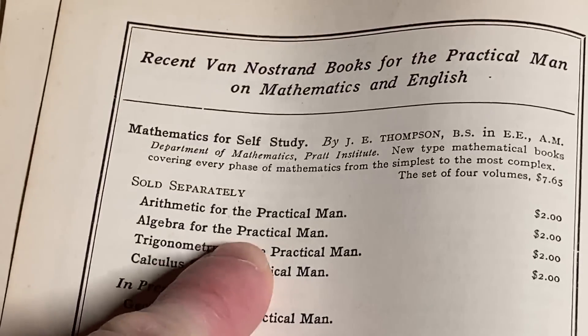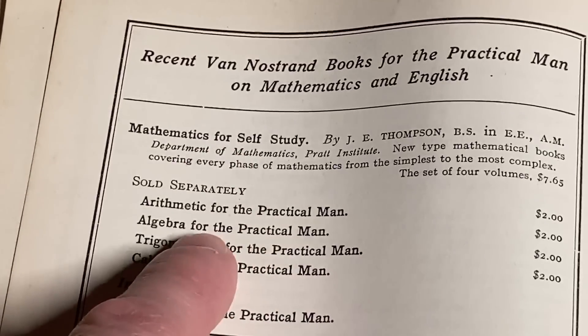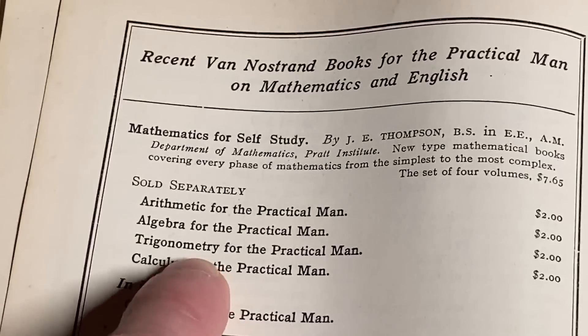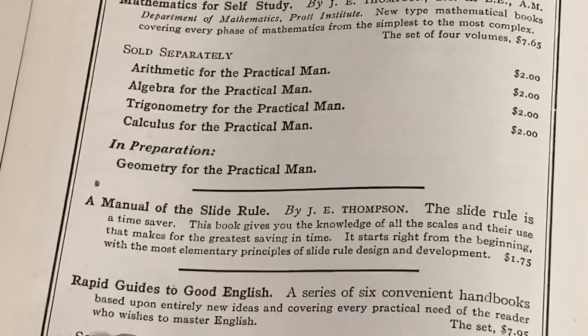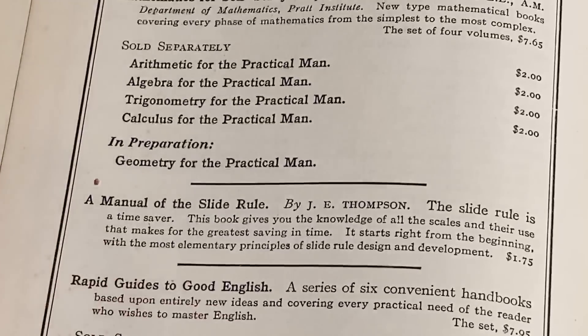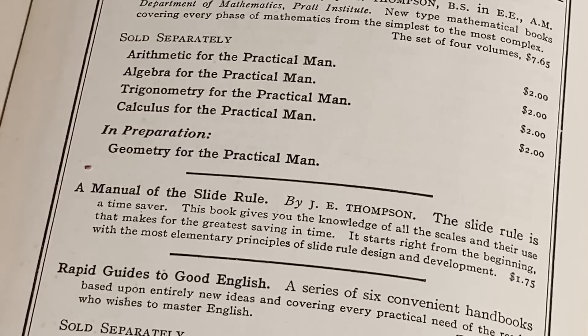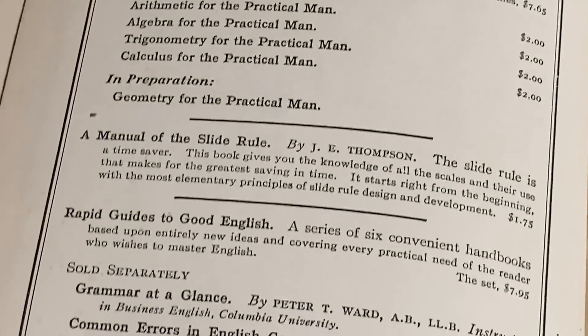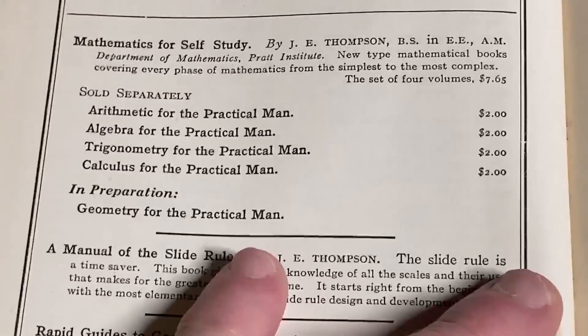So, yeah, when he was younger, these are the books that he used to learn mathematics, which is really interesting. A Manual of the Slide Rule by J.E. Thompson. Great author. Rapid Guides to Good English. Books are incredible. Even with the internet, I prefer physical books.